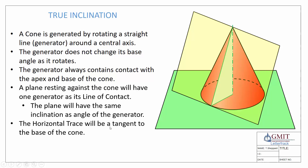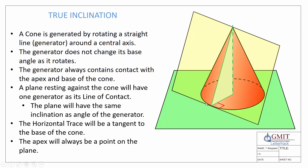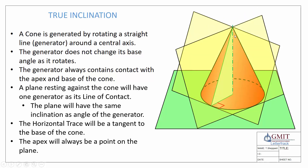We can also see that the horizontal trace of our plane will be a tangent to the base of the cone. Here's the horizontal trace, and it's a tangent to the base of our cone. Lastly, the apex will always be a point on the plane, because no matter where our generator rotates around, the apex is always contained. The horizontal trace is always going to be a tangent to our base, and our new generator gives us the line of contact.